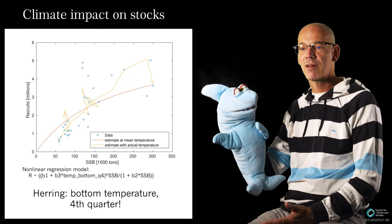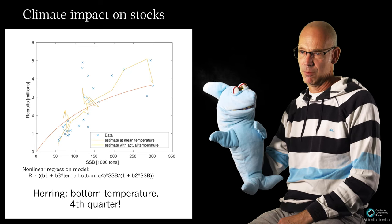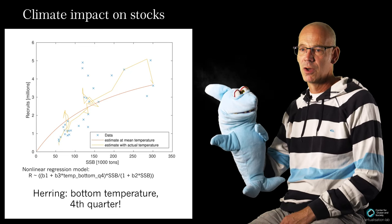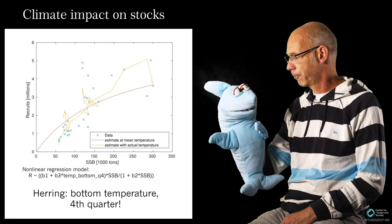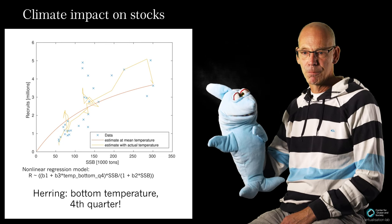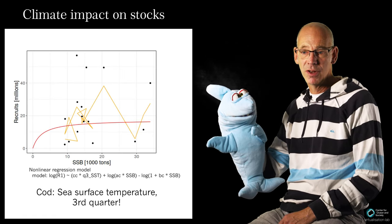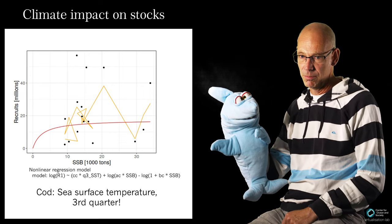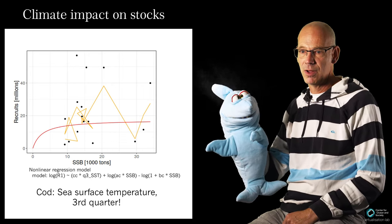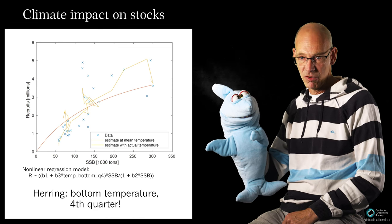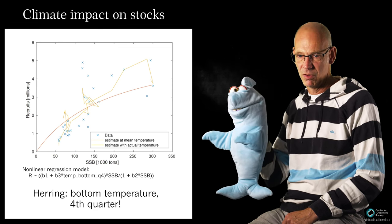For herring, we found a significant impact of bottom temperature in the fourth quarter on recruitment in the following year. For cod, we found a significant impact of surface temperature in the third quarter. In both cases, an increase in temperature was negative for recruitment strength.